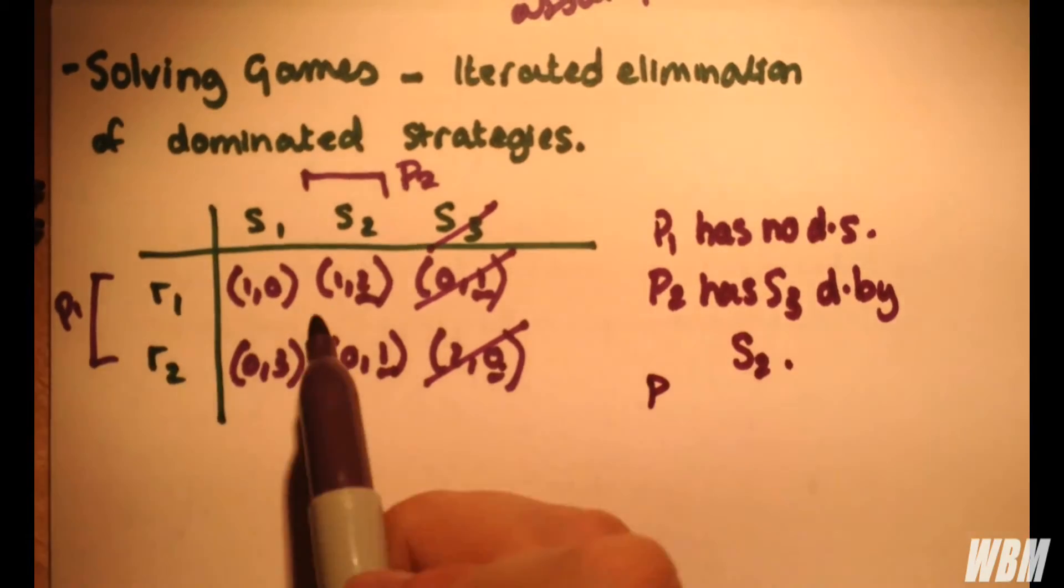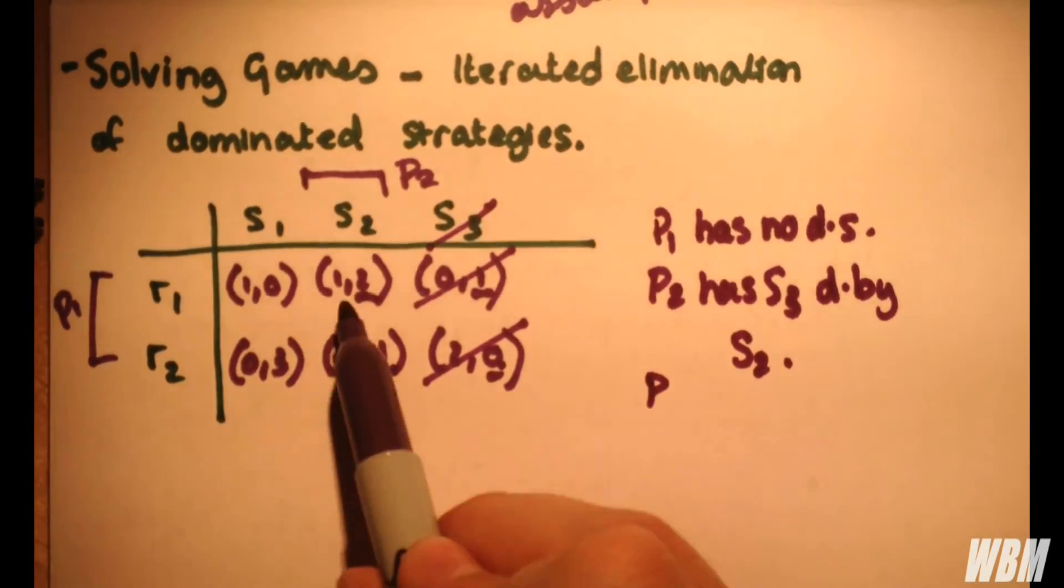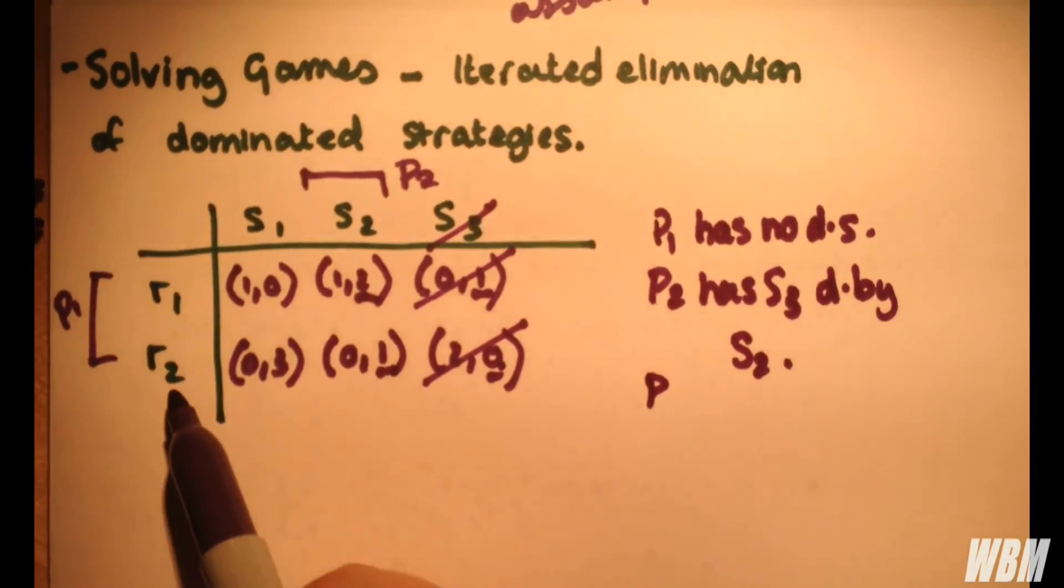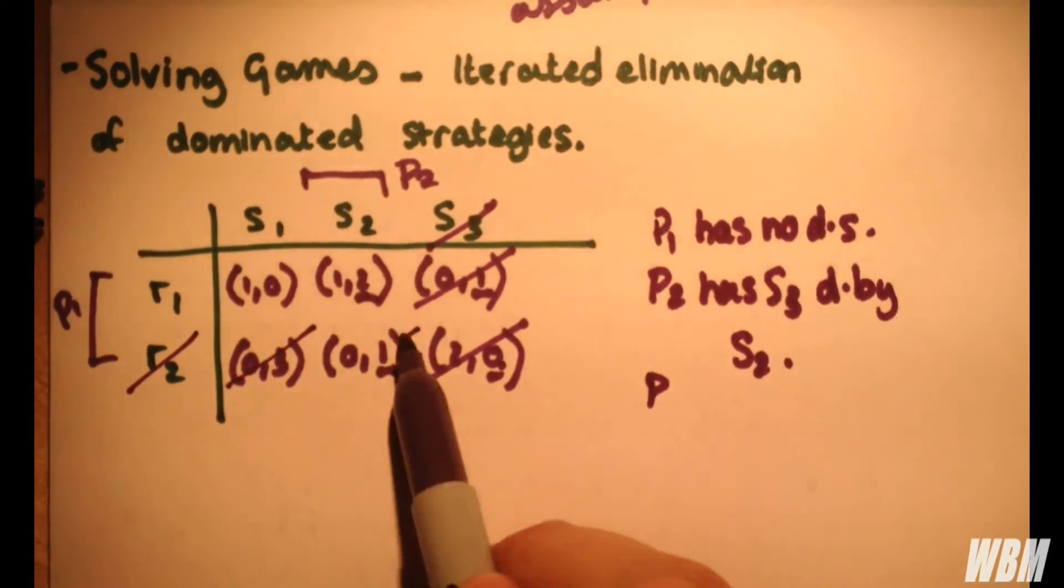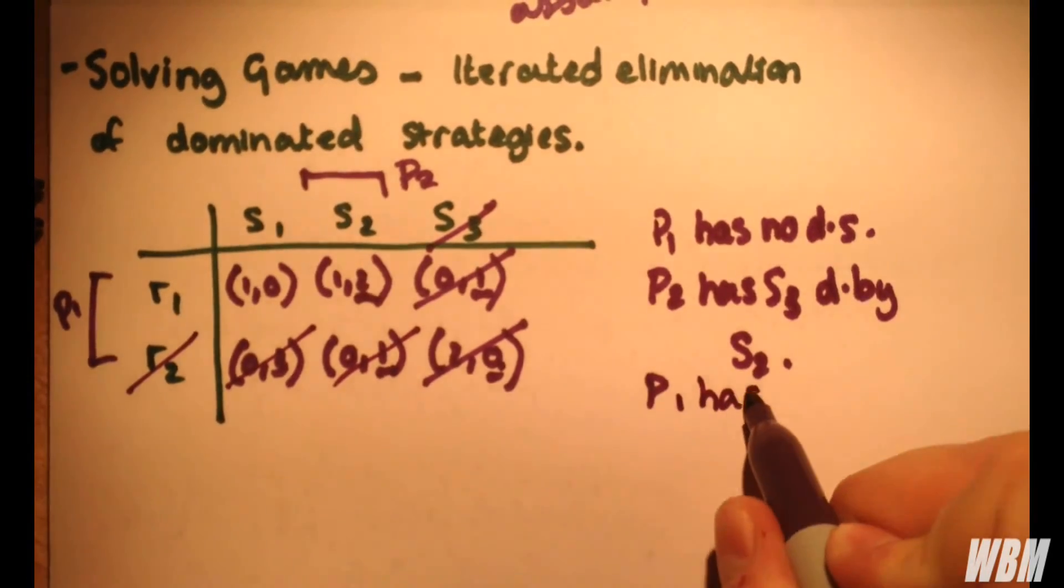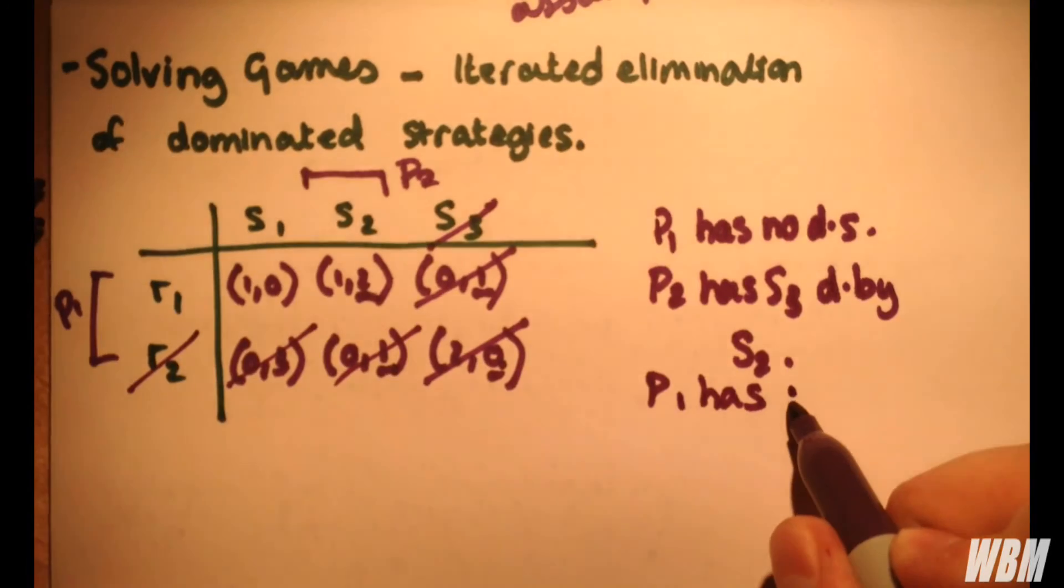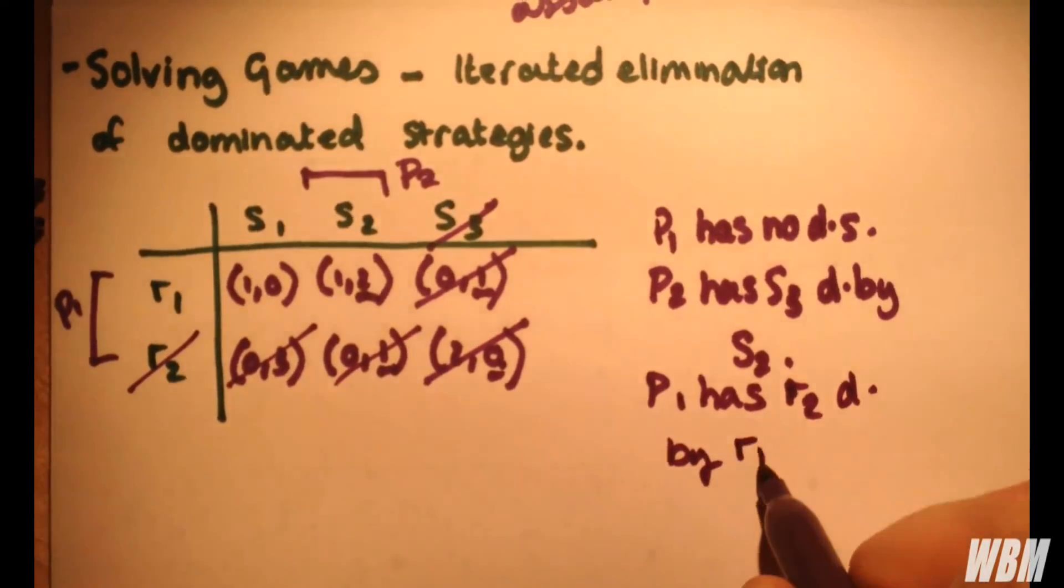So we look at player 1 again. So for player 1, we have 1 and 0, and 1 and 0. So for player 1, R1 dominates strategy R2. So we can eliminate strategy R2, because of the 1's and the 0's.